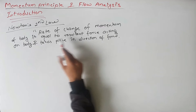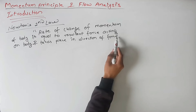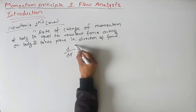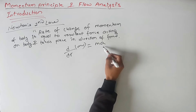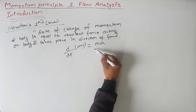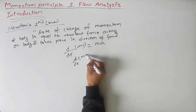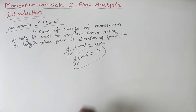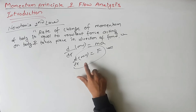The rate of change of momentum of a body is equal to the resultant force acting on the body, and this takes place in the direction of the force. Mathematically: F = d/dt(mv). This gives us net force equal to d/dt(mv) = F. We now verify how this applies in the case of flow.